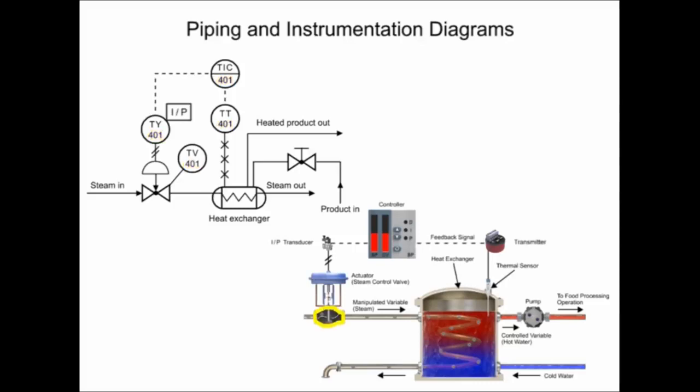The valve that allows steam to flow through the pipe is the symbol with two triangles.